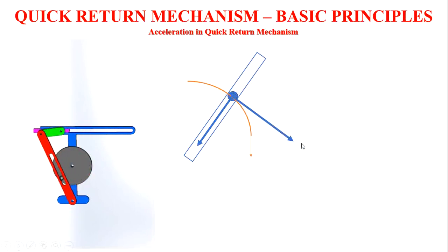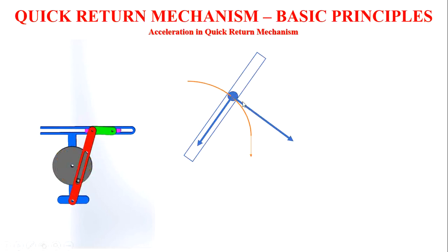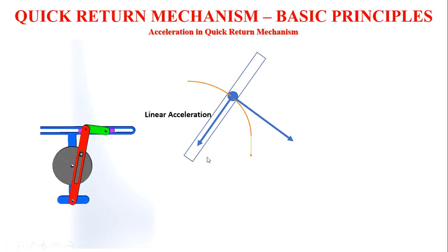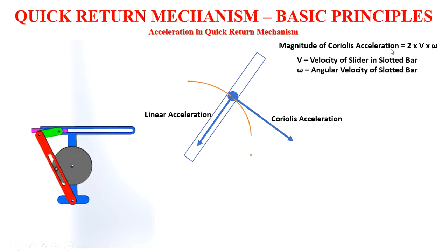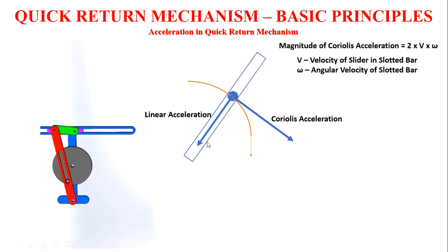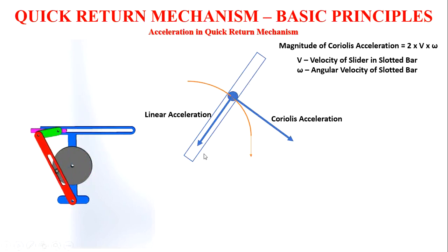We have to identify the Coriolis acceleration component. We know the magnitude of this component, and based on that we can determine the acceleration. The magnitude of the Coriolis acceleration is 2 × v × ω, where v is the linear velocity of the slotted bar and ω is the angular velocity of the slotted bar. We calculate it to determine this magnitude.